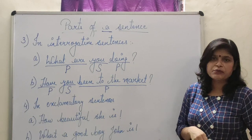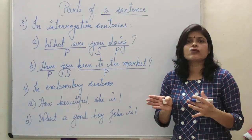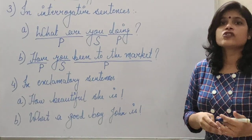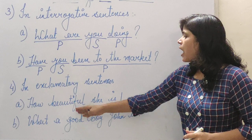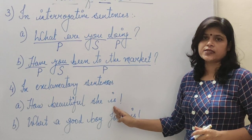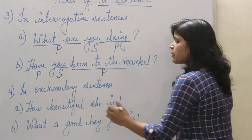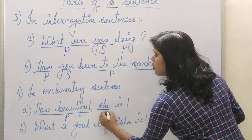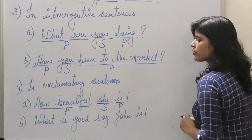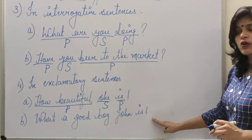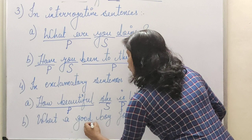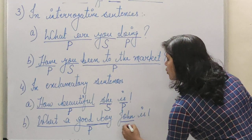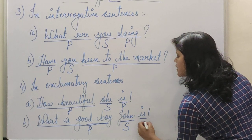Now let's look at exclamatory sentences. Exclamatory sentences are those sentences which express a strong feeling. For example: 'How beautiful she is!' Here 'how beautiful' is predicate, 'she' is subject, and 'is' is predicate. Second example: 'What a good boy John is!' Here 'what a good boy' till 'boy' is predicate, 'John' is subject, and 'is' is predicate.